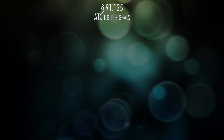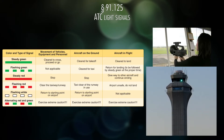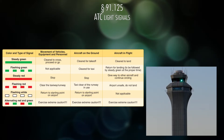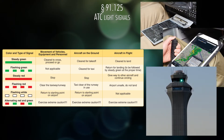ATC light gun signals: in case you lose communication and need to communicate with air traffic control, these are the signals you can expect from them. They have a light gun that they will shine at you from the control tower to give you instructions. This is something good to know, but you don't necessarily have to memorize it — you can print it out and keep it on your clipboard or screenshot it on your iPad. You should have it somewhere accessible in the airplane in case you lose communication.